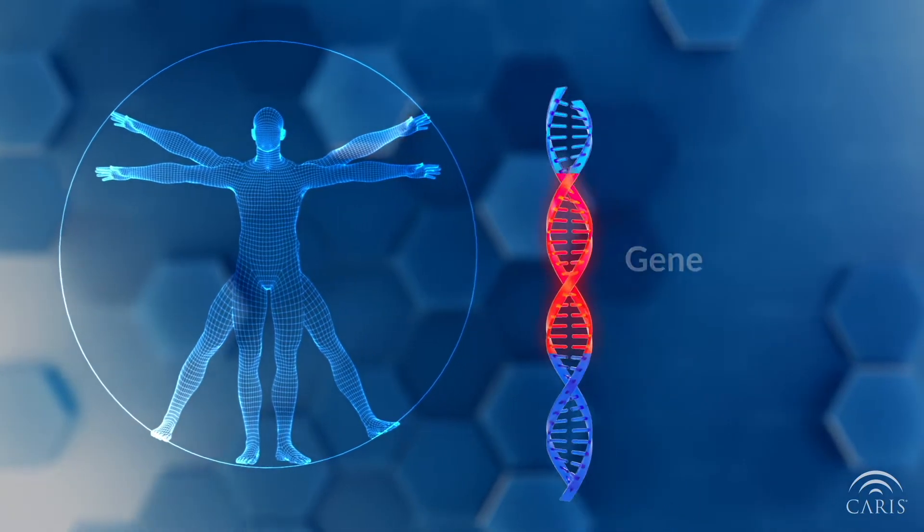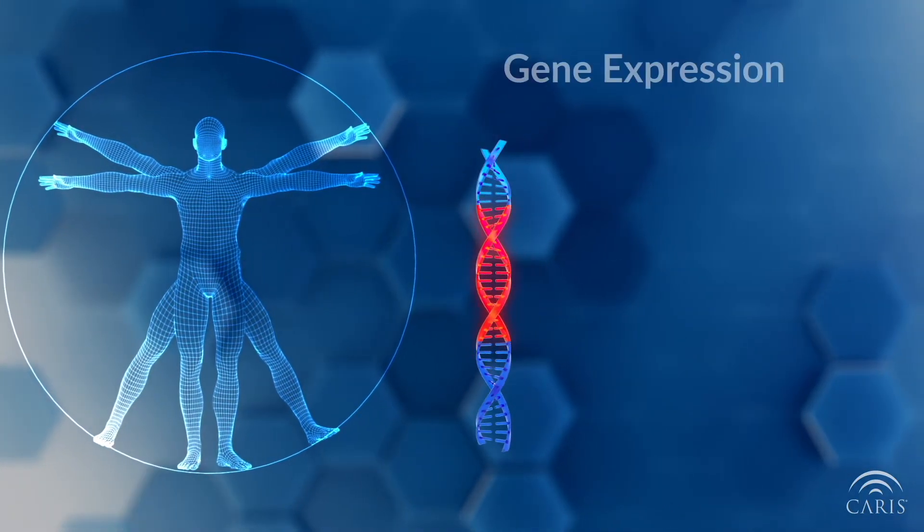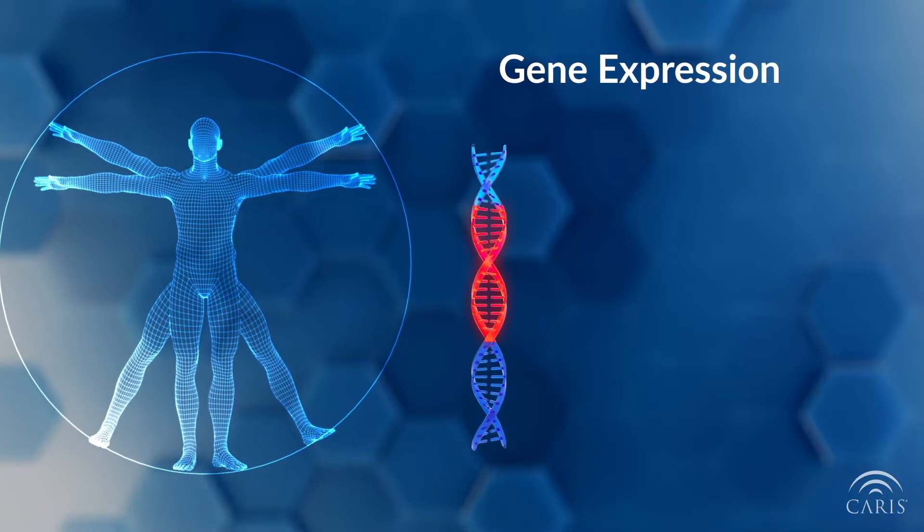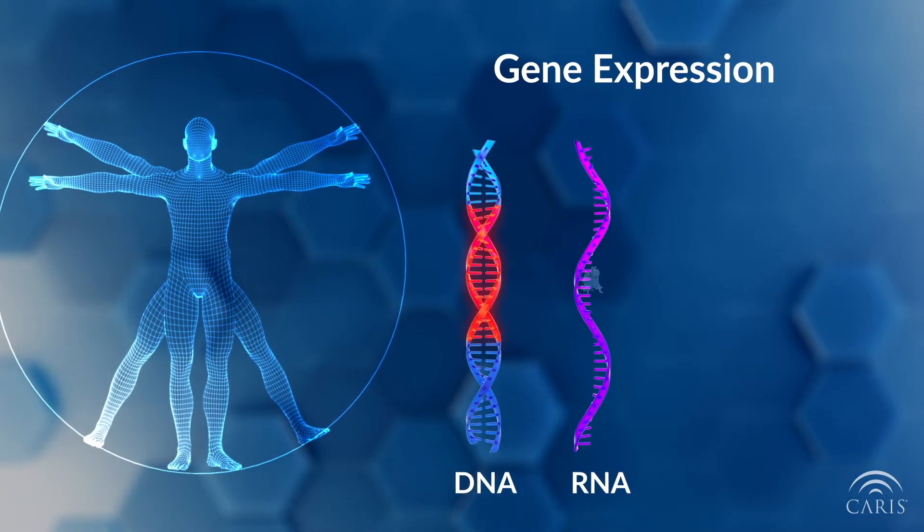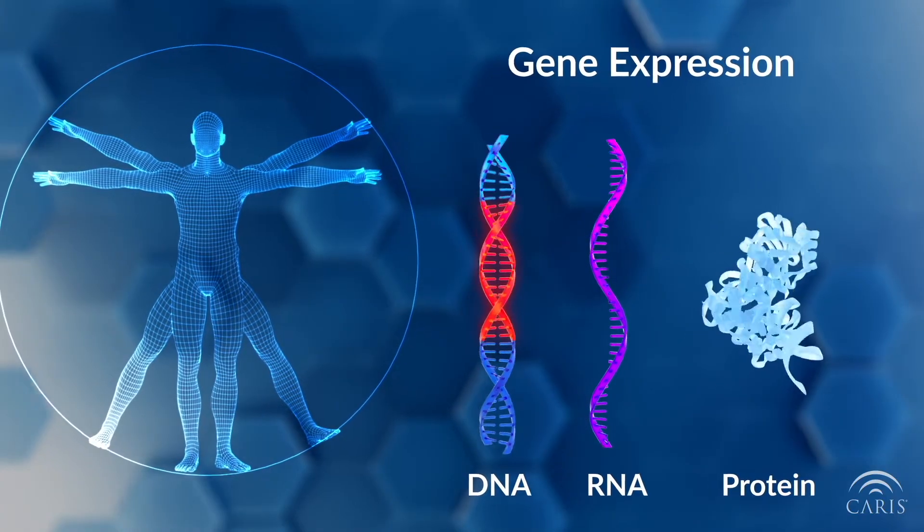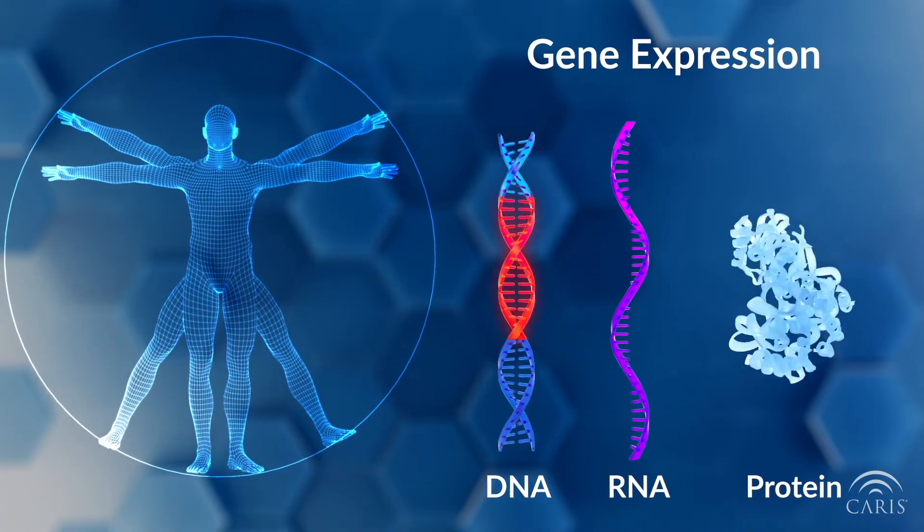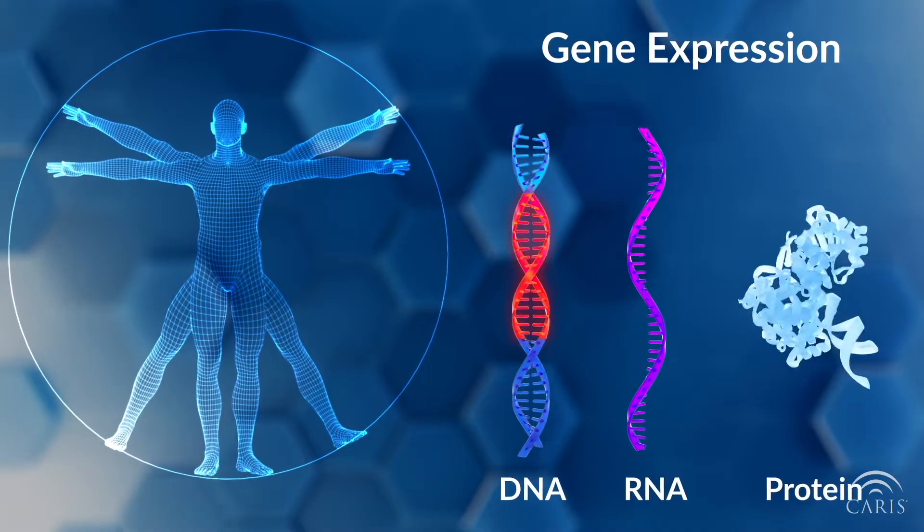Our genes function when they are turned on during a process called gene expression. The DNA gene sequence is transcribed into RNA, which is then translated into a protein. The protein that is created will then carry out a specific function in the cell.